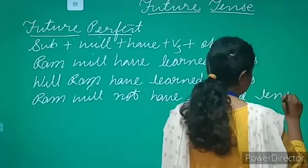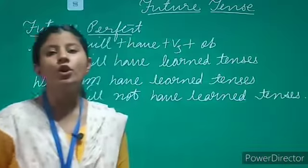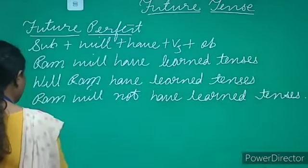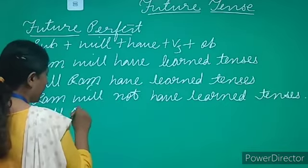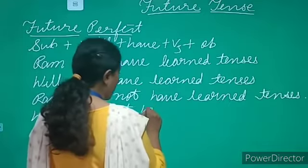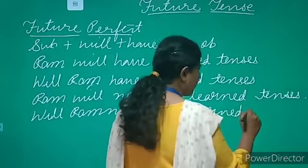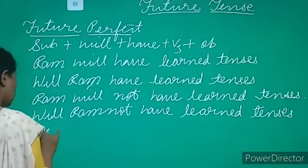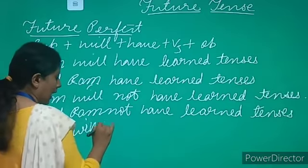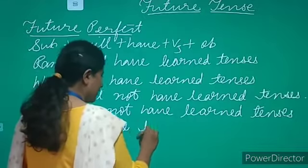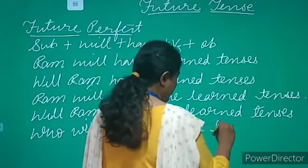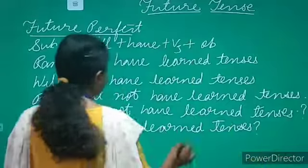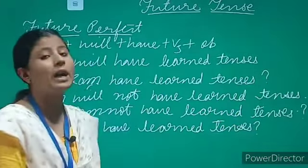So this is how you form the negative sentence. Now if you want to change it into interrogative negative, you need: 'Will Ram not have learned tenses?' For a WH-word sentence: 'Who will have learned tenses?' Remember, if it is an interrogative sentence you need to insert a question mark at the end.